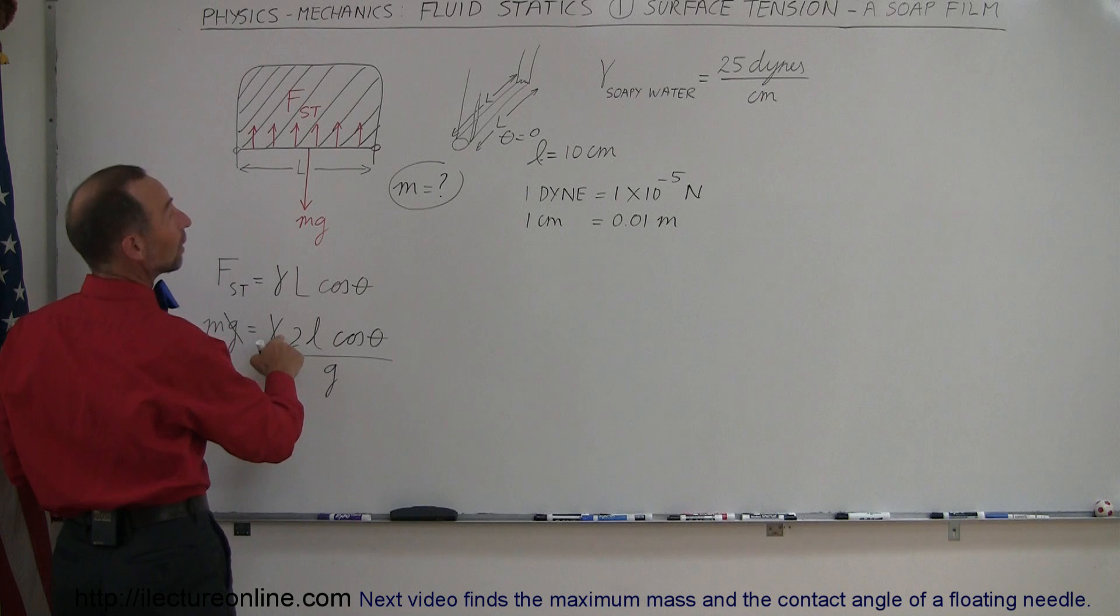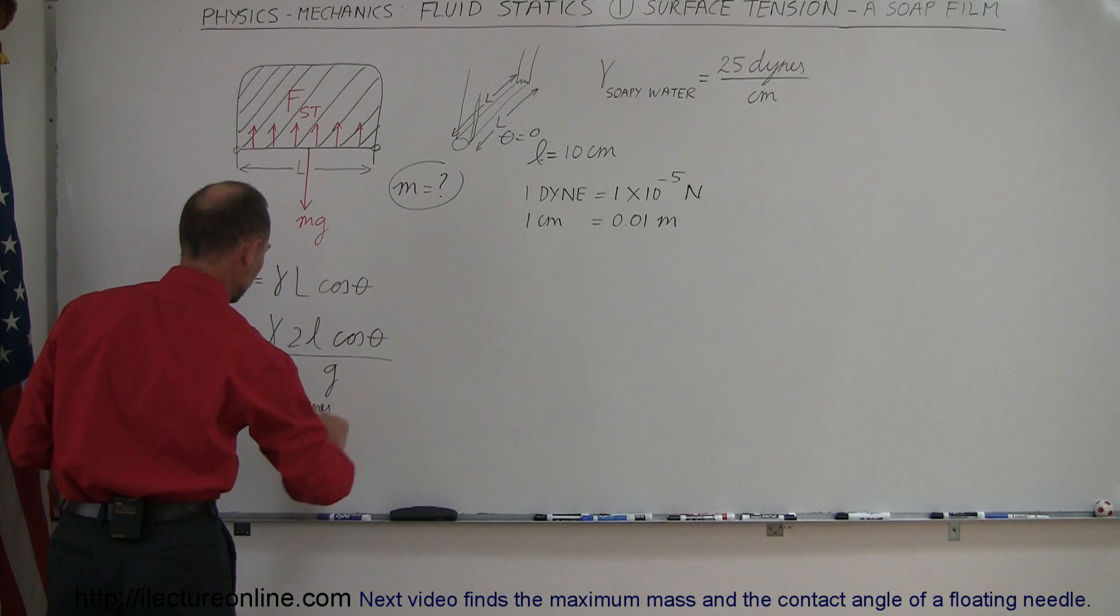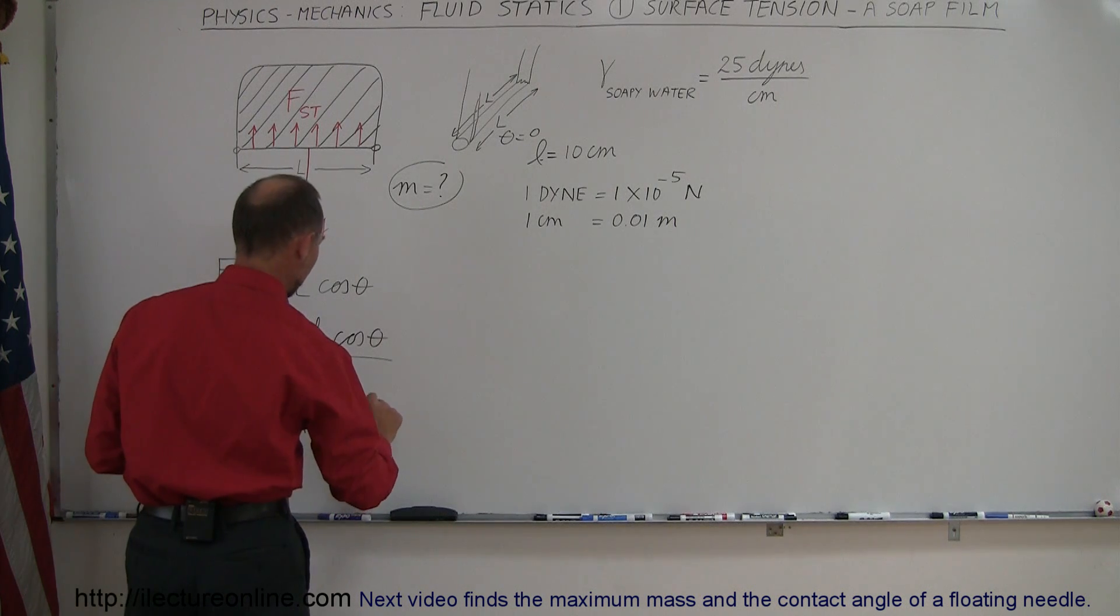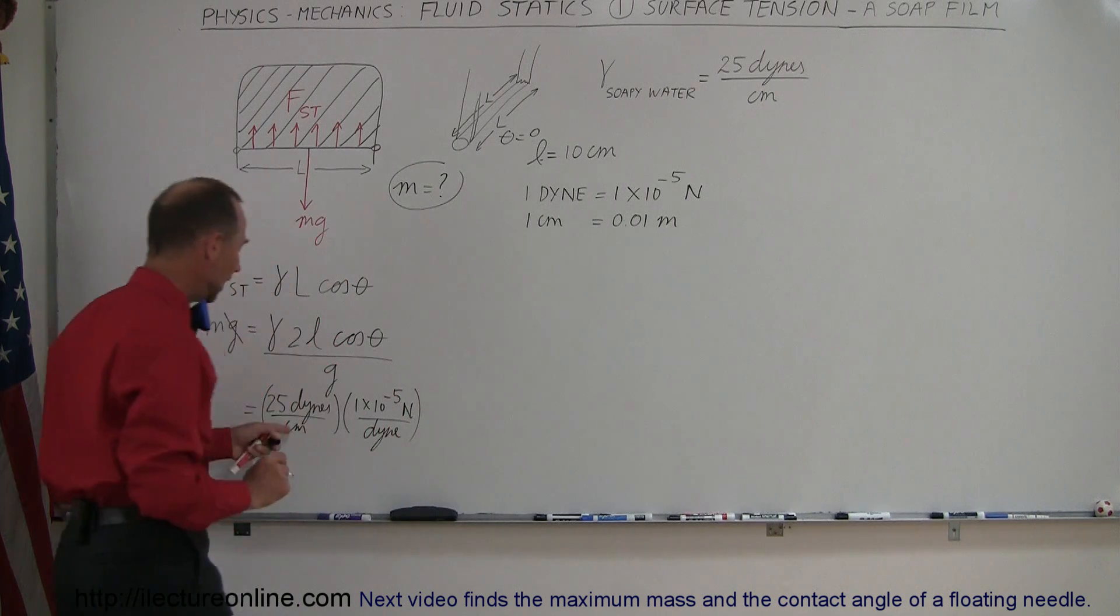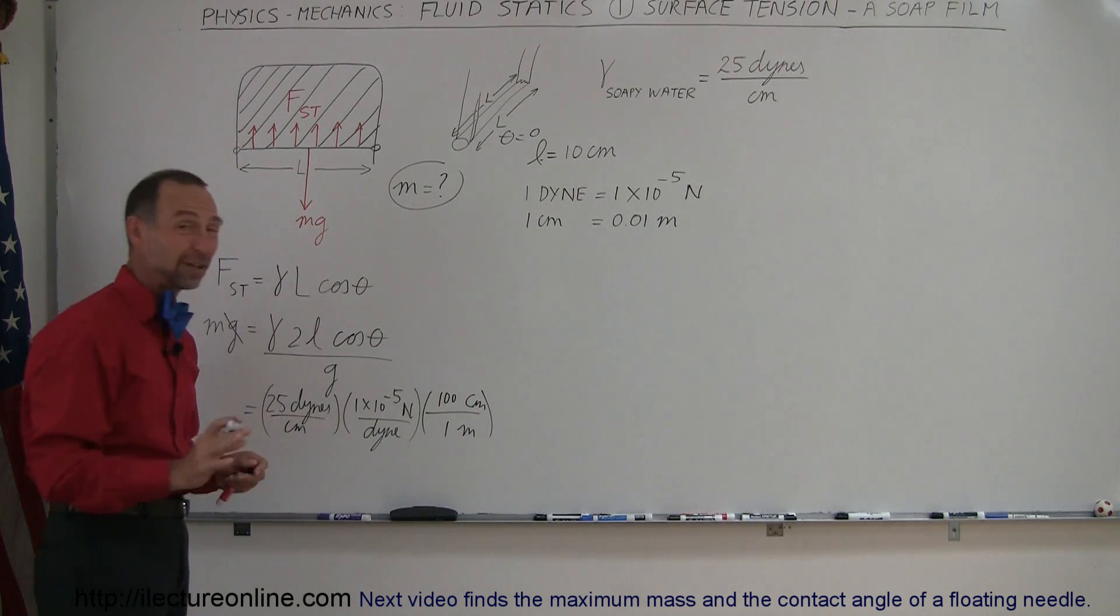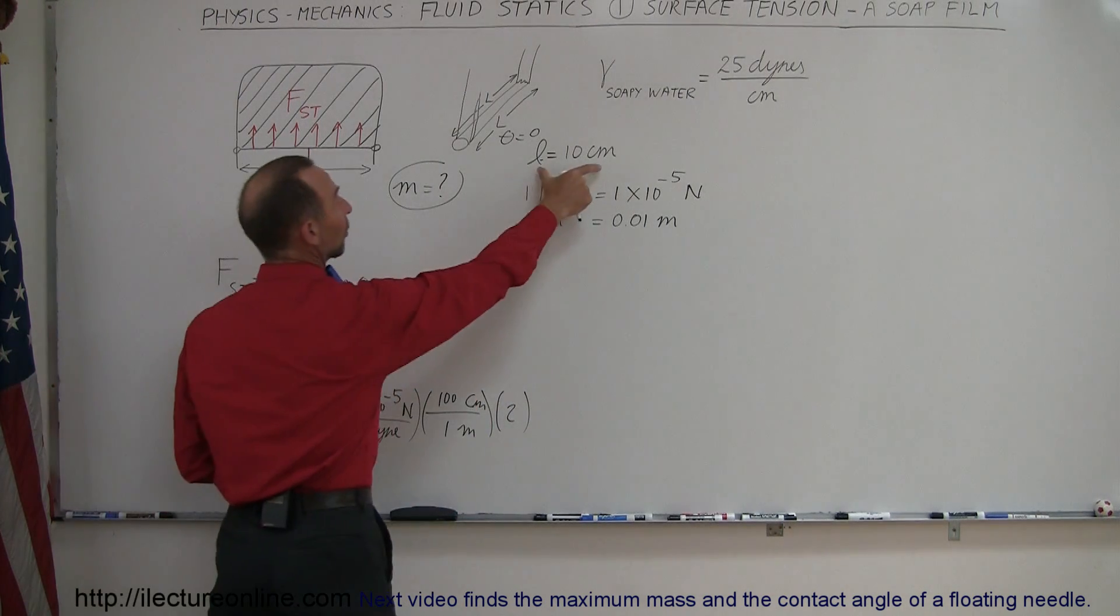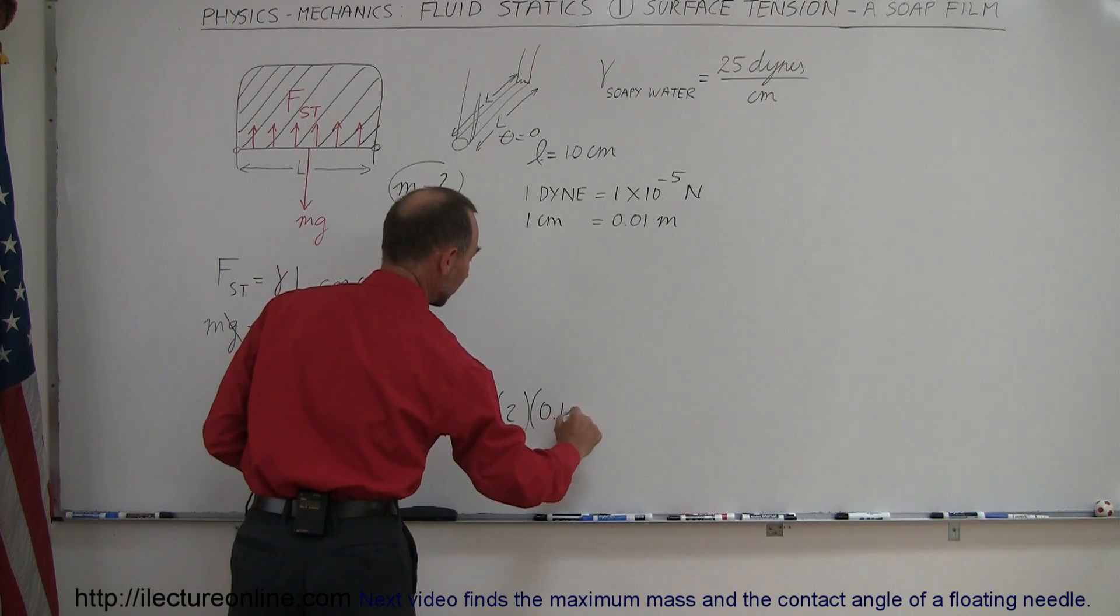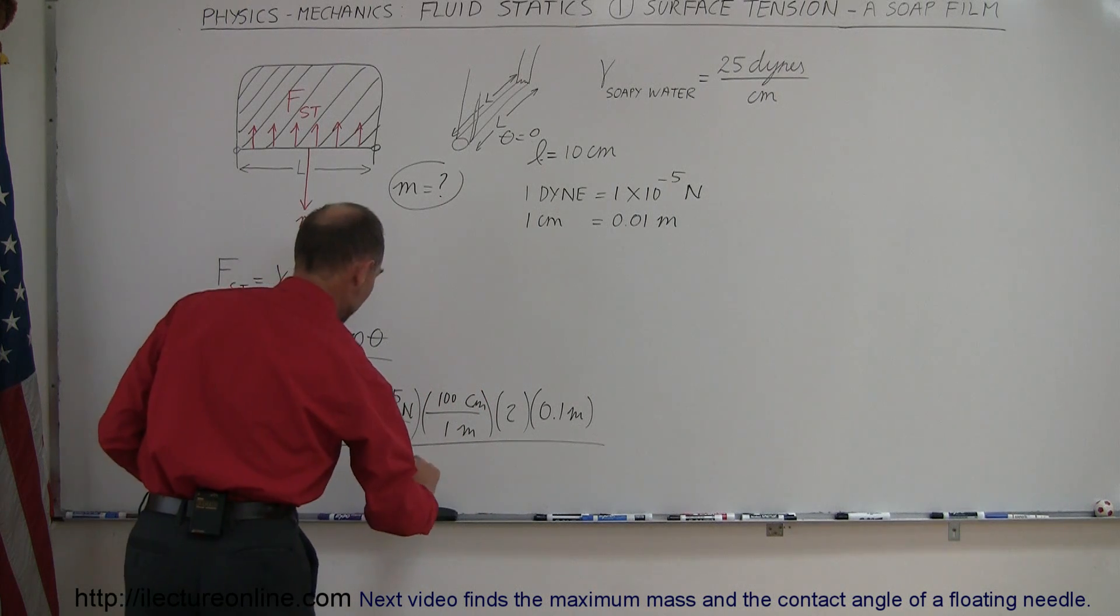So this is equal to 25 dynes per centimeter. Now of course we're going to have to convert that to newtons per meter. So that would be 1 times 10 to the minus 5 newtons per dyne. That's how we convert from dynes to newtons. And then for centimeters, we want to go to meters. So meters and centimeters, 1 meter is 100 centimeters. So now we've converted that to standard units. Times 2 times the length of the wire, which we said was 10 centimeters. Convert that to meters, 0.1 meter. And finally we take the whole thing and divide it by 9.8 meters per second squared.